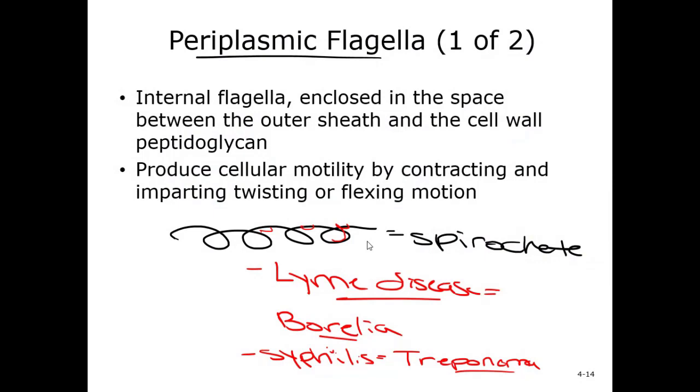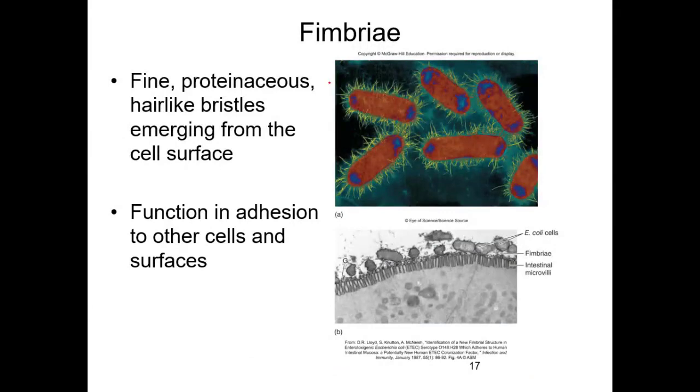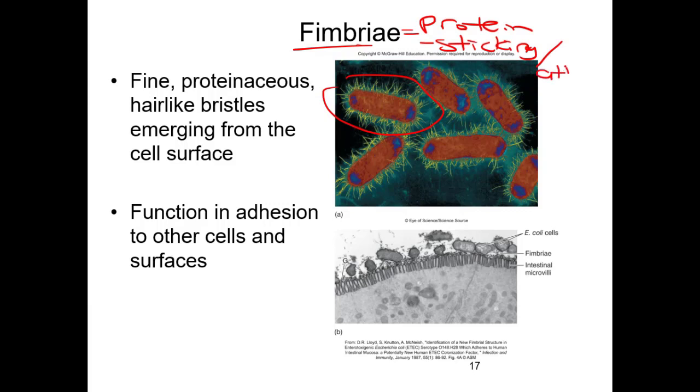Fimbriae are these little hair-like things on the outside. These are made up of protein and are used for sticking or attaching or adhering. E. coli needs to stick to your intestines. This is actually a picture of E. coli sticking to your microvilli. Or Streptococcus in your throat needs to stick in the throat or on your teeth. They use these bristles to stick to surfaces.